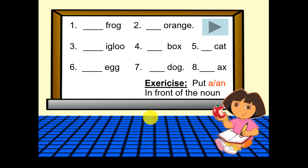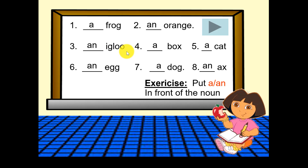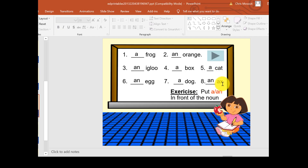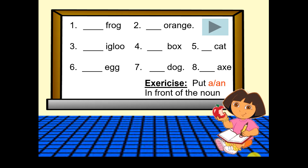Okay, now check your answers. A frog. An orange — that's a vowel, A-E-I-O-U. An igloo — vowel. A box. A cat. An egg. A dog. And... an axe — there should be an 'e' there, let me correct that. An axe.